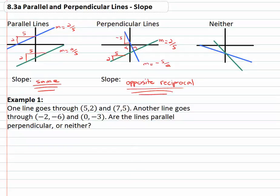When lines are neither parallel nor perpendicular, there's really no pattern. One might have a slope of negative two-thirds and the other a slope of negative five-fourths — nothing special. We're not really interested in those cases.